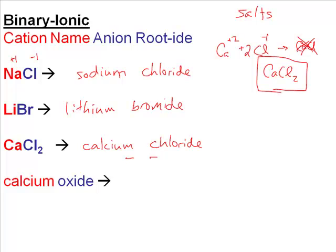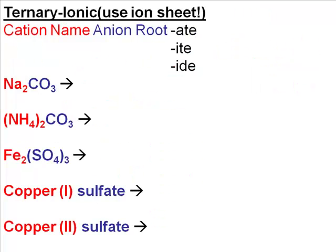Let's try calcium oxide. Ca is calcium, and oxide means oxygen — O. The charge on oxygen is negative 2 because it's in group 6 on the periodic table and wants to gain 2 electrons. Calcium is plus 2 because it's in the second group and wants to lose 2 electrons. Since calcium is plus 2 and oxygen is minus 2, they neutralize each other. So the formula is simply CaO.